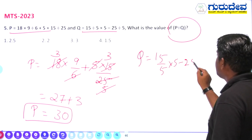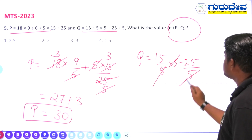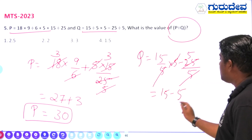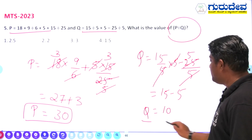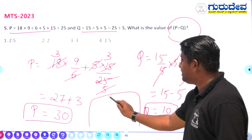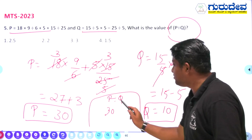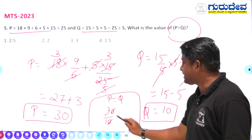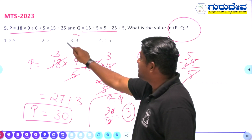Now solving Q: (15/5) × 5 − 25/5 = 3 × 5 − 5 = 15 − 5 = 10. So Q = 10. Therefore P divided by Q = 30 divided by 10 = 3. Option number 3 is the right answer.